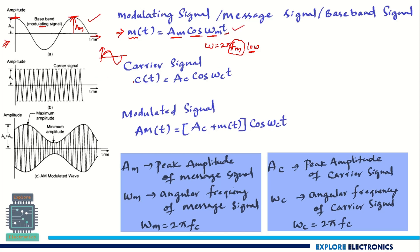Now if you look at the carrier signal, c(t) indicates the carrier signal with respect to time. Ac is the amplitude of the carrier signal and it is also a cosine wave, where ωc indicates 2πfc and t is time.